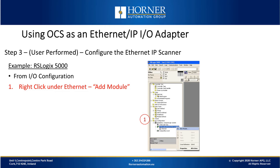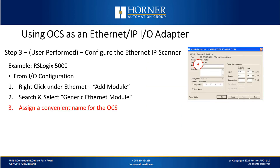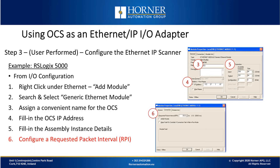We're using RSLogix 5000, and in that you go to the I/O configuration, right click under Ethernet, and press Add Module. Then you'll search and select Generic Ethernet Module. You'll assign a convenient name for the OCS — this will be the prefix for the tags that get automatically created later. Then you'll fill in the IP address for the OCS and fill in the assembly instance details. Assembly instance will always be 100; other fields will vary depending on the application. Then you'll configure a requested packet interval, which is how often the data is sent. Module-defined tags are created automatically in the background.